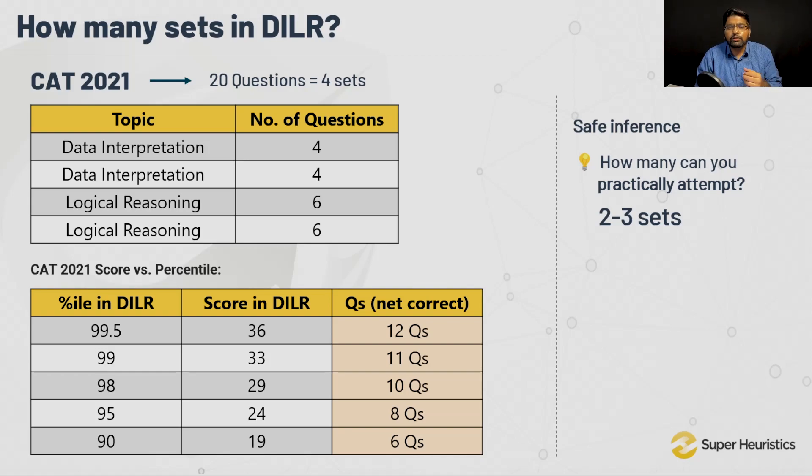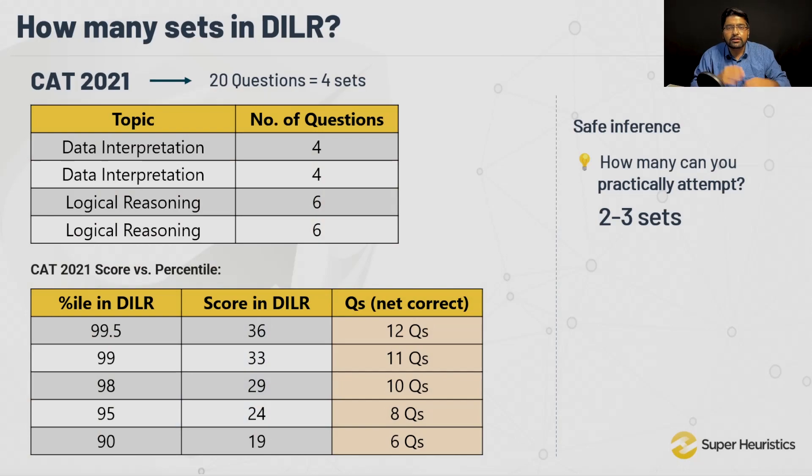You may ask: why go into the exam thinking you can only attempt 3 sets? What if the exam is so easy you can attempt 4? That's not going to happen. As long as you have to solve 20 questions of DILR in 40 minutes, 4 sets is not practical. Hard code this in your mind, because you need fixed algorithms when you go into the exam — otherwise it becomes very difficult to plan quickly.